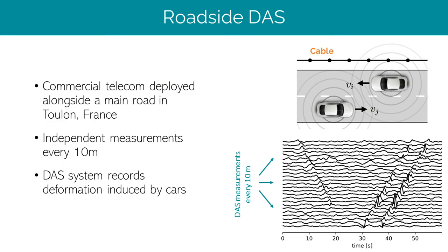Now let's consider a specific application, namely traffic monitoring. We looked at data measured along a commercial telecom cable deployed parallel to a main road in the city of Toulon in France. The spacing of each measurement was 10 meters, and the data were sampled at 250 Hz. After basic pre-processing, we could clearly see the deformation induced by cars traveling along this road. An example of one minute of data shows one car going in one direction and two cars traveling in the other direction, marked with orange lines. The slope of these traces is inversely proportional to the velocity of each car, so we can use DAS to detect cars and estimate their velocity.